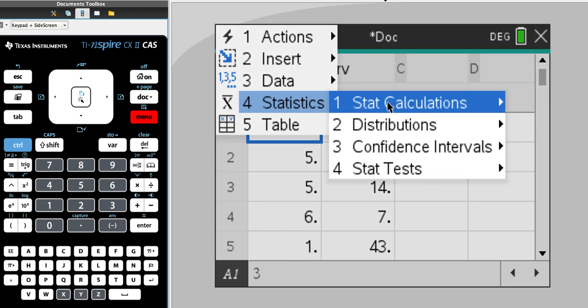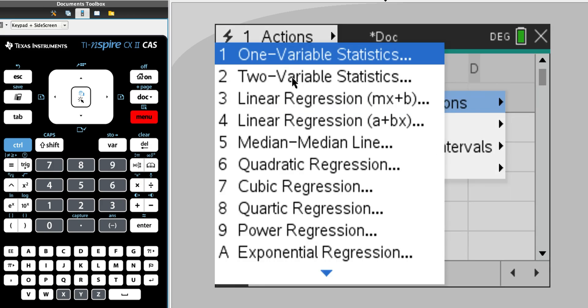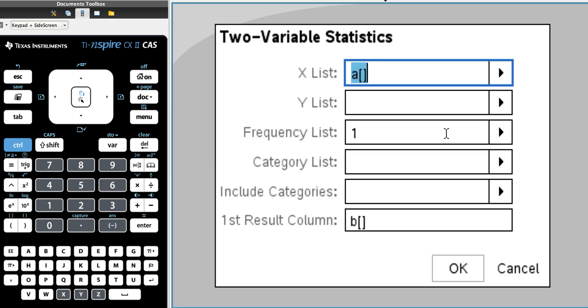I want two-variable statistics. In this window, it's asking for the x list, or my explanatory variable. I've called my explanatory variable EV. The second row I put in my response variable, which I've called RV.